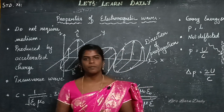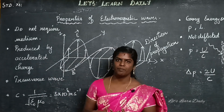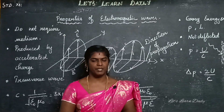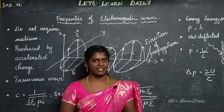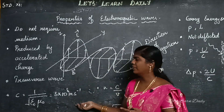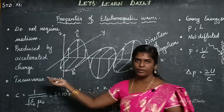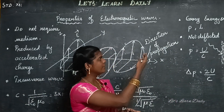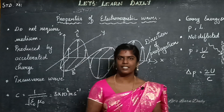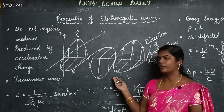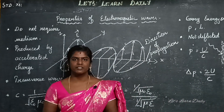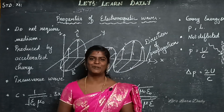Let's summarize 4 to 5 points — mostly 3 marks for this detail question. Important points: they do not need a medium; it is a transverse wave; electric and magnetic fields are perpendicular to each other and to the direction of propagation; they are produced by accelerated charges; they carry energy and momentum. So reflect on these points and take this diagram. This is an important 3-mark question.